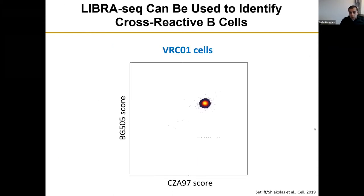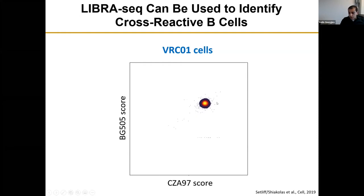When we looked at LibraSeq scores for the two HIV antigens, most B cells identified from the BRCL1 B cell line had high scores for both. This indicated we can successfully identify B cells that are cross-reactive between multiple different variants of the same antigen type. As expected, BRCL1 is a broadly neutralizing antibody and cross-reacts with multiple variants of the HIV-1 envelope glycoprotein used as antigen.